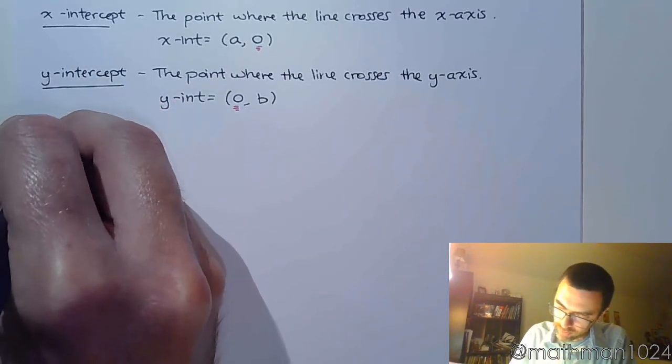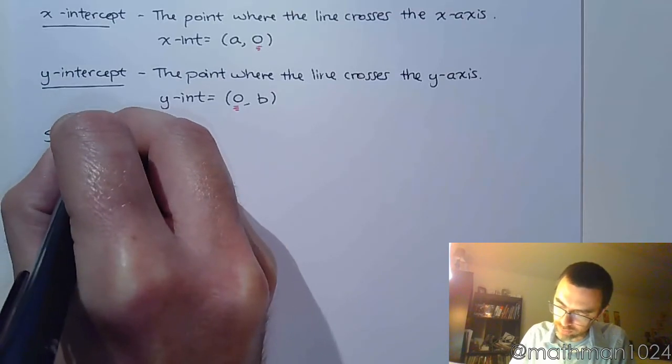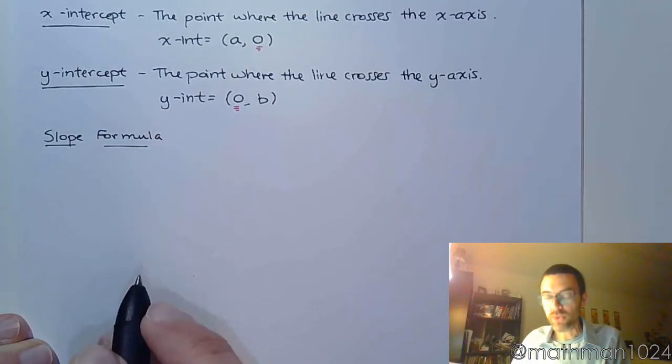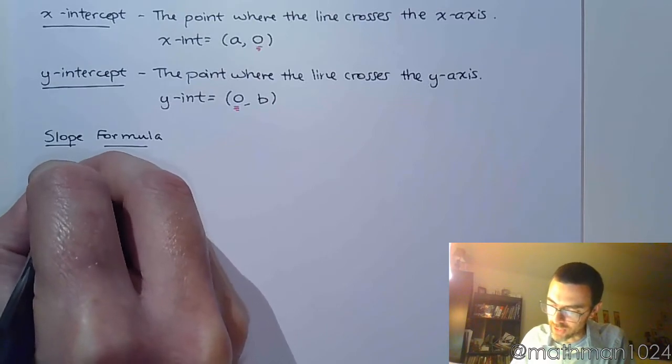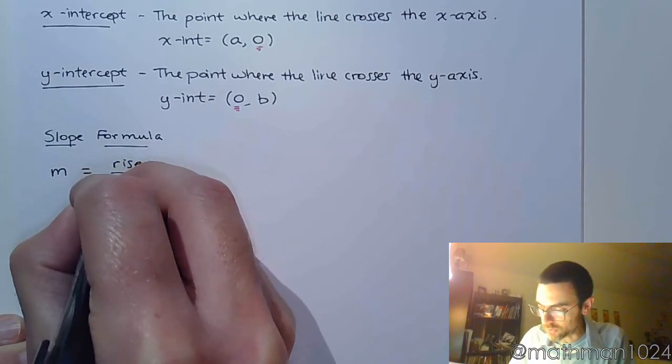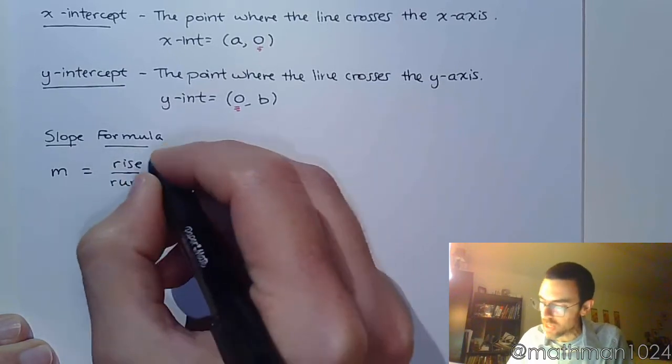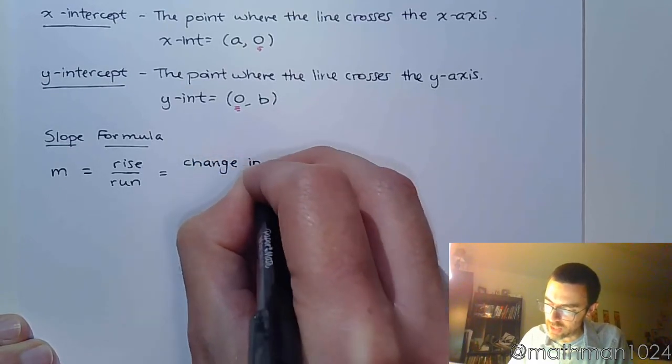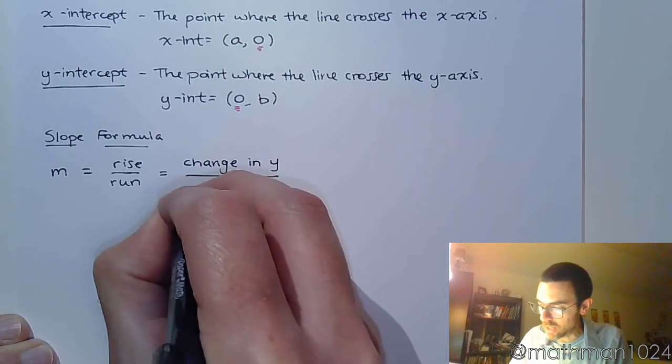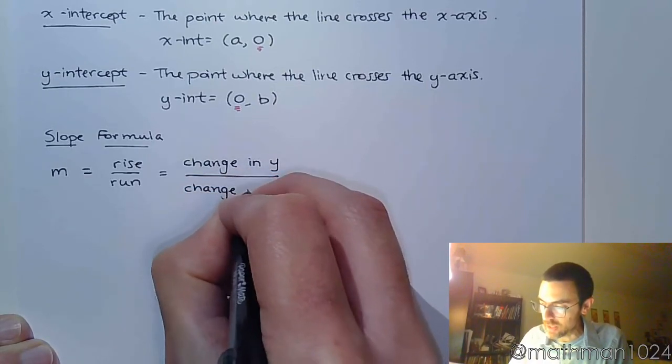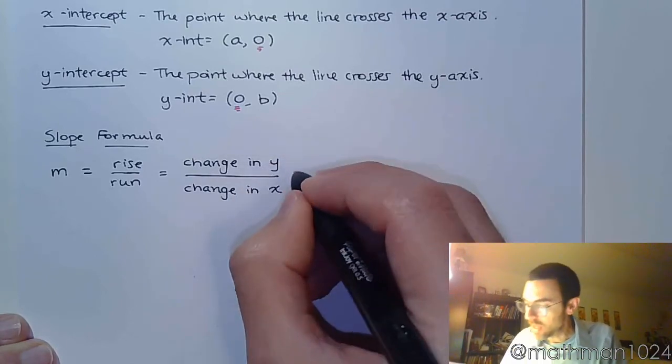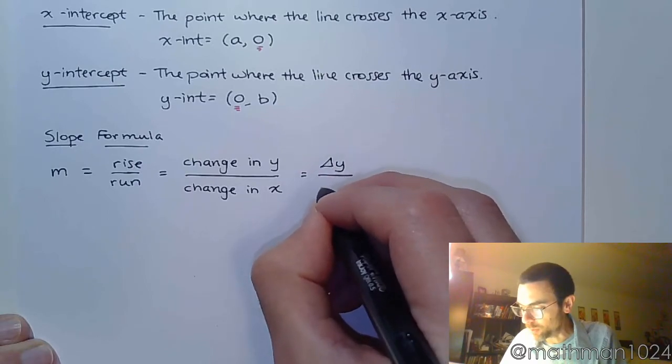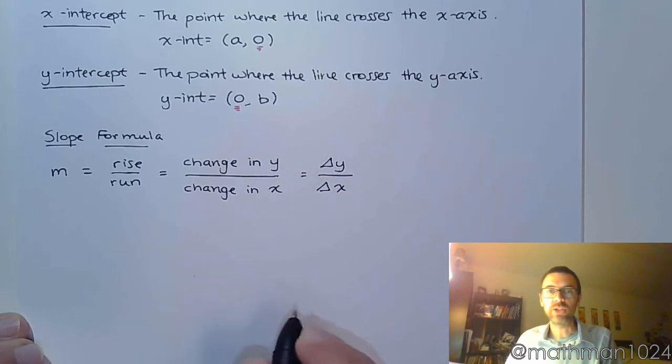One more thing we need to talk about is the formula for this slope. For the slope, we often denote this with a lowercase m. Our slope is rise over run. When we talk about rise, we're talking about how we change in the y-direction. And our run is how we change in the x-direction. We can use that little delta symbol to say the change in y over the change in x.